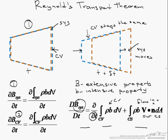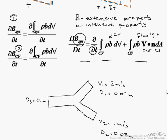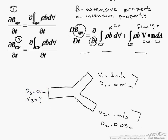So let's take a look at a typical problem. And we have this system here, this control volume. And we have a velocity 1 here which is 2 meters per second and it has a diameter of 0.07 meters. We have a second velocity here with a diameter of 0.03 meters. We have a third diameter but what we want to do is find out what the velocity there is.